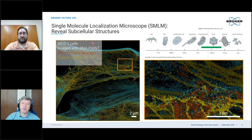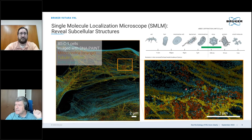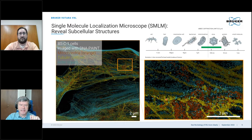Most of you have probably seen single molecule localization images before. Here is a typical example. I just want to point out the main features of single molecule localization microscopy before we go into more details. What you see here are individual dots — these are not noise. In a normal confocal image we would say that looks really noisy, but here it's the information. Each dot indicates the position of a single dye molecule.